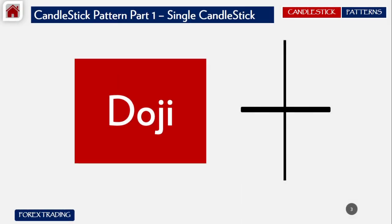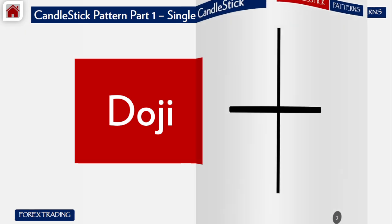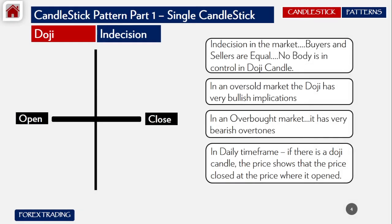Number one is the Doji. This is how it looks — just like a cross. This is the open price and this is the close price. It shows indecision in the market, meaning that buyers and sellers are equal and nobody is in control.